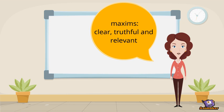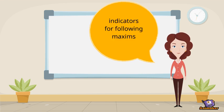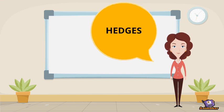Using these four maxims, people try to be as clear, truthful, and relevant as possible. Of course, it is not always possible to follow all of these maxims in every situation. If people are unable to adhere to the maxims, there are indicators which can be used to show that the speaker is trying to follow but can't promise to fulfill all the criteria. These expressions are so-called hedges, and examples are following, matching the maxims.